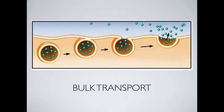For larger molecules, we use bulk transport. The first form is exocytosis — the cell releasing materials like proteins. A vesicle full of whatever the cell is getting rid of travels up, bonds with the cell membrane, opens up, and expels its contents. The vesicle then becomes part of the cell membrane, so two things happen: the cell membrane grows a little, and material is expelled from the cell.